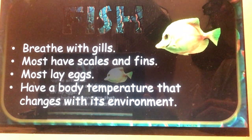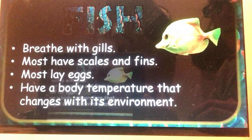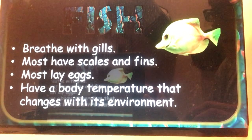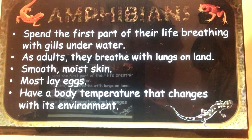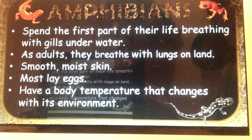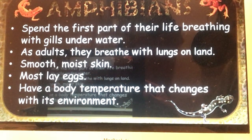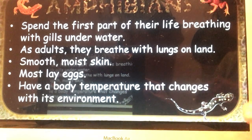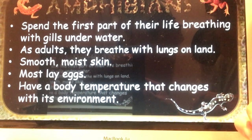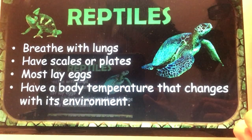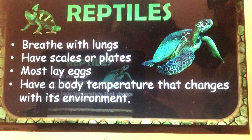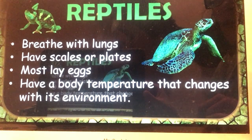Fish can breathe with gills, most have scales and fins, they lay eggs, and have a body temperature that changes with their environment. Amphibians spend the first part of their life breathing with gills underwater; as adults they develop lungs. They have smooth, moist skin, mostly lay eggs, and have a body temperature that changes with their environment. Reptiles breathe with lungs, have scales or plates, lay eggs, and also have a body temperature that changes with their environment.